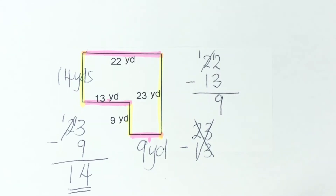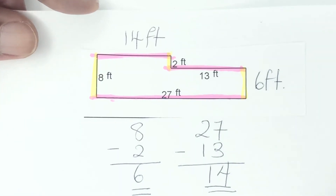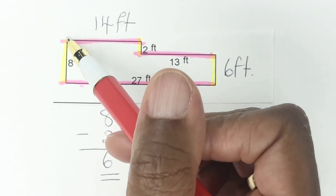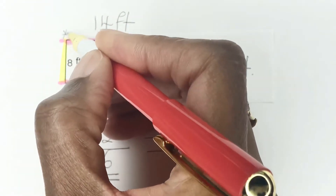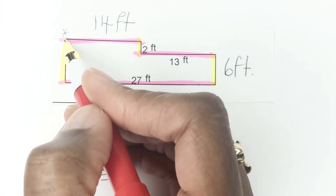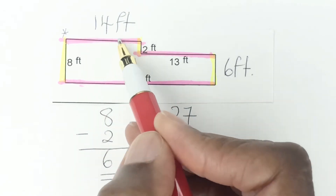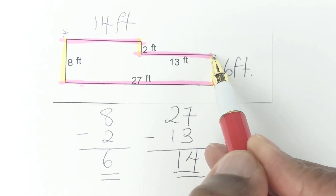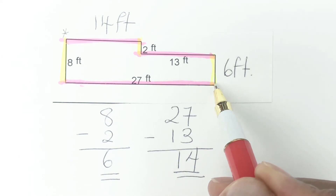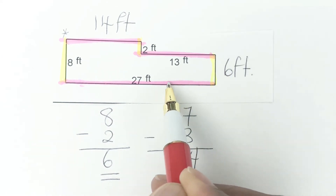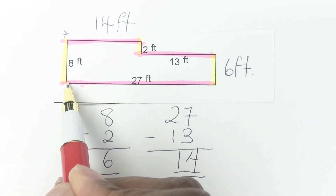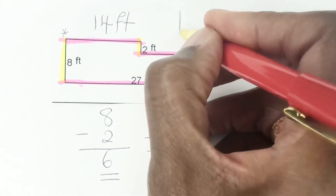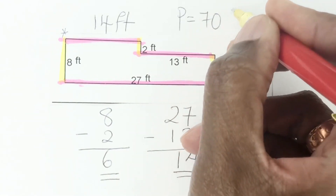Now that we know all the sides, we can go back and get the perimeter. It's always best to start in one corner so you know where you end up — go all the way around adding and end up back where you started. So: 14 plus 2 is 16, plus 13 is 29, plus 6 is 35, plus 27 is 62, plus 8 is 70. The perimeter of this irregular shape is 70 feet.